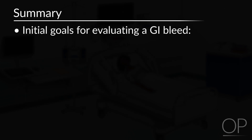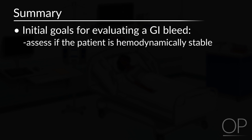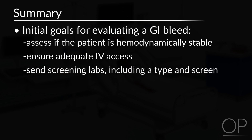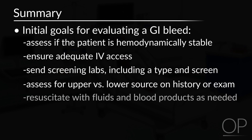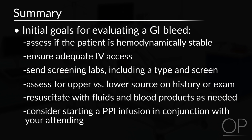In summary, your initial goals for evaluating a GI bleed are to assess if the patient is hemodynamically stable, ensure adequate IV access, send screening labs including a type and screen, assess for upper versus lower source of GI bleeding based on your history and physical exam, resuscitate with fluids and blood products as needed, and consider starting a PPI infusion in conjunction with your attending. That concludes our video on GI bleeding. Thank you for watching.